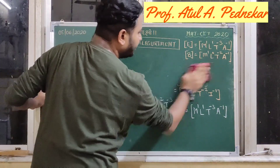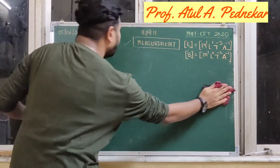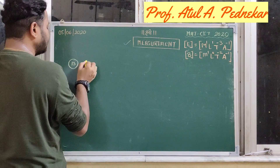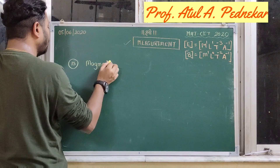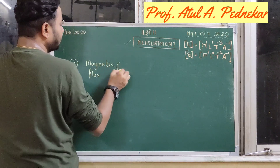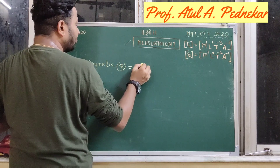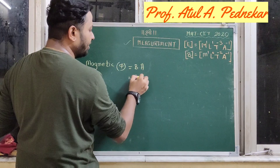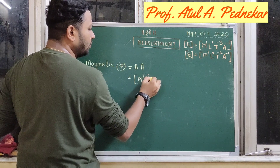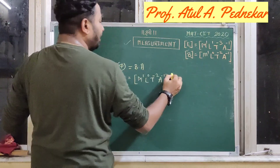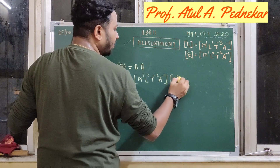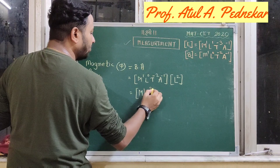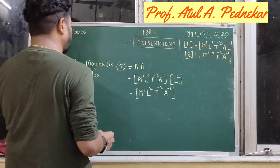I'll note these two results: electric field intensity has dimensions M1, L1, T minus 3, A minus 1; magnetic field intensity (magnetic induction) has dimensions M1, L0, T minus 2, A minus 1. These will help us find the dimensions of the next physical quantities. Quantity number 13 is magnetic flux, denoted by phi. It is calculated as B multiplied by area. Magnetic induction dimensions M1, L0, T minus 2, A minus 1, multiplied by area (L raised to 2), gives dimensions M1, L2, T raised to minus 2, and A raised to minus 1.